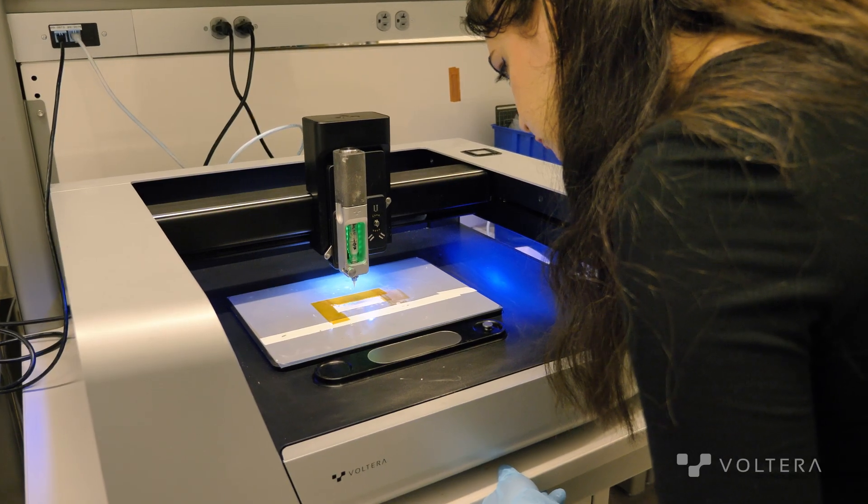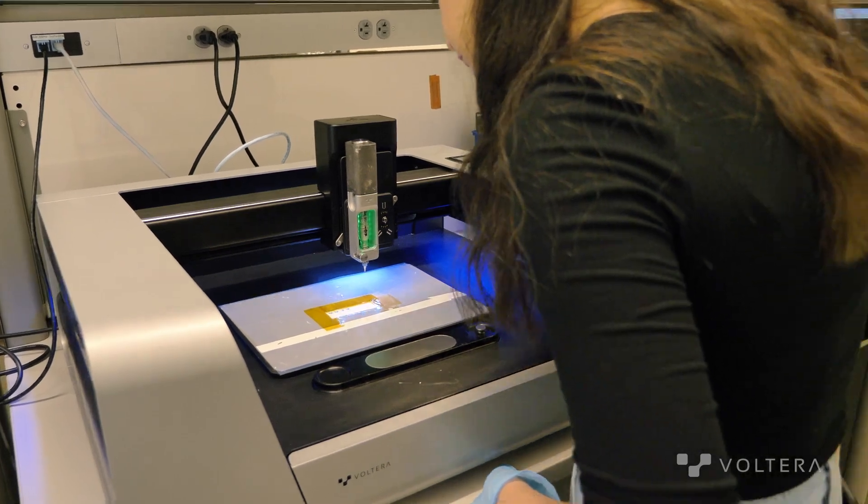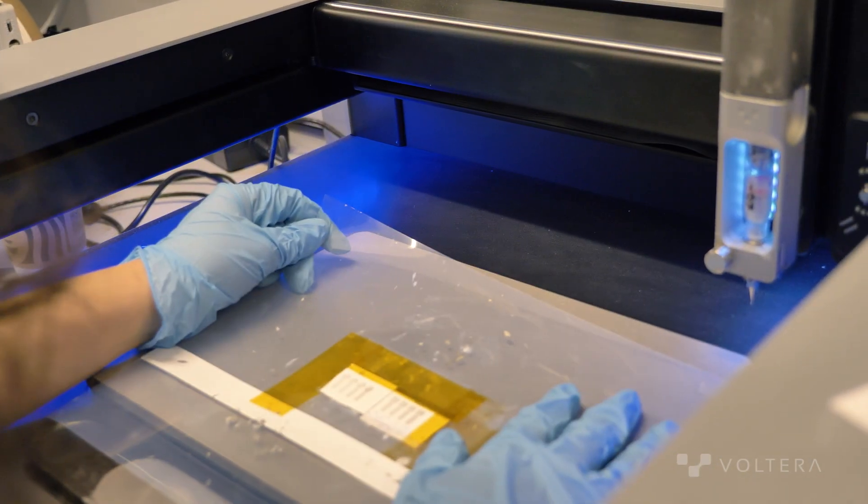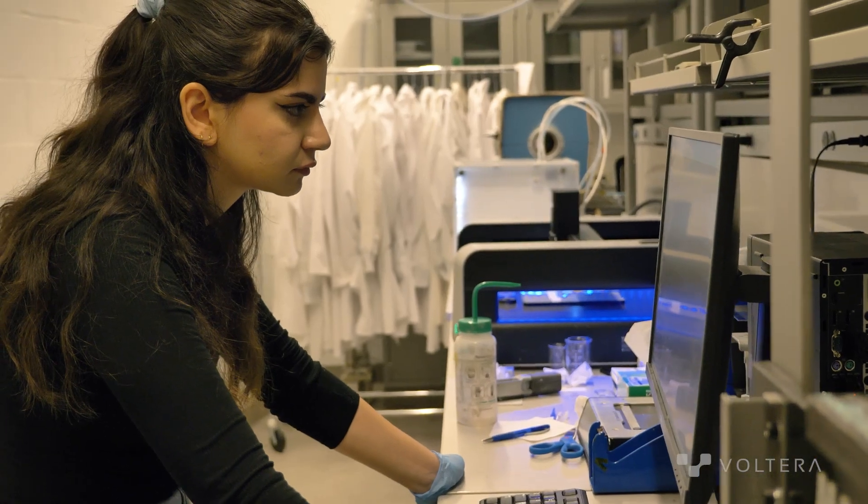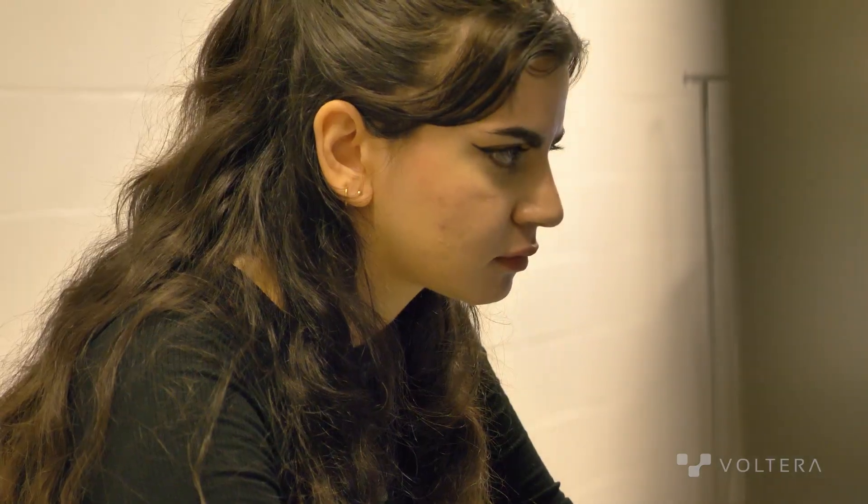Once you know how to use Eagle, you can print pretty much any design. In terms of the printing process that I would follow for developing the tattoos, initially I have my substrate, which in this case is the tattoo paper. I have that prepared and cut out, and from there I literally just follow the steps in the Nova program.